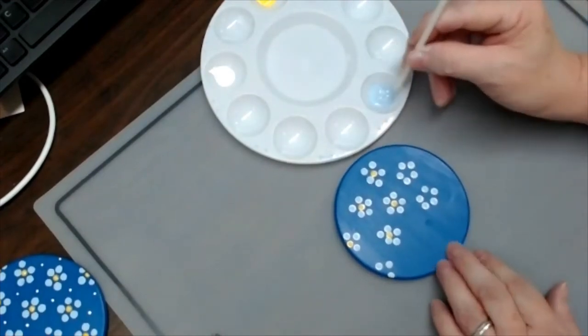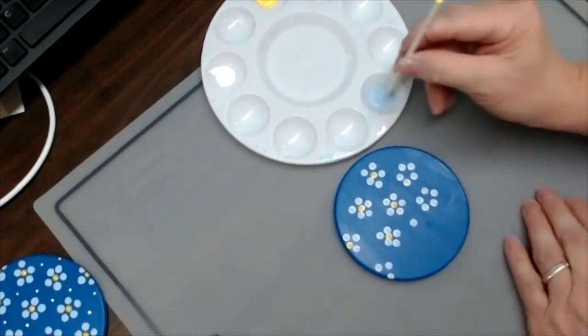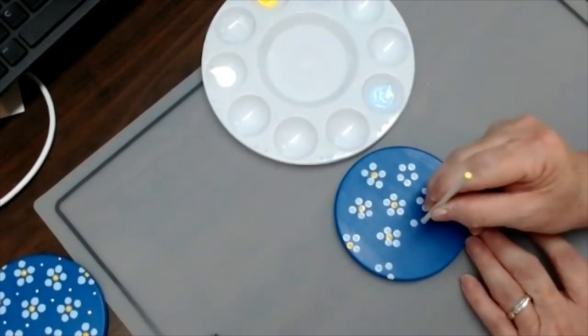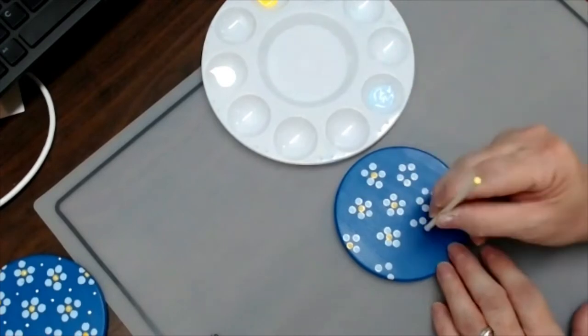So there's another one. If you put a piece of paper underneath the coaster, it'll make it a little easy for you to turn it.